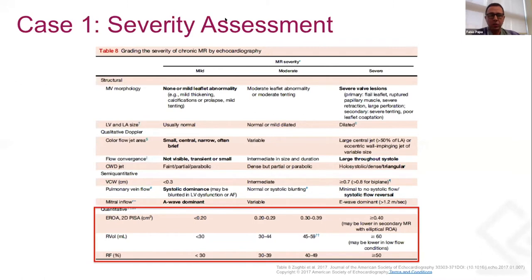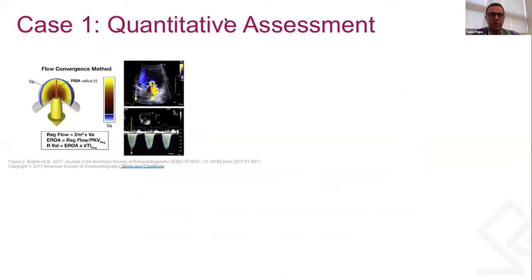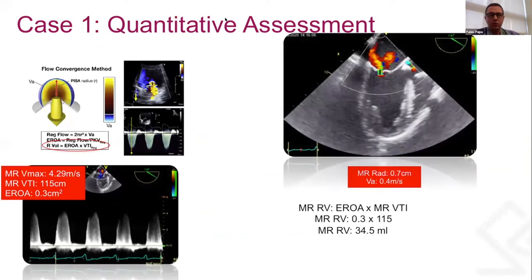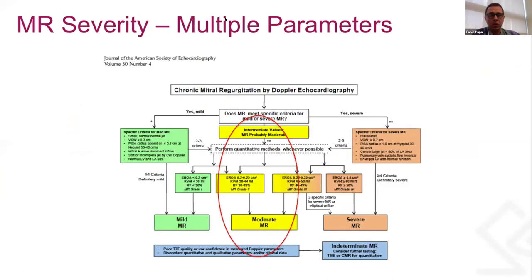Moving to the quantitative approach, we can use the PISA method to measure the EROA, regurgitant volume, and regurgitant fraction to better characterize the severity of mitral regurgitation. For our patient, using the PISA assessment, we measured an EROA of 0.3 cm² and a regurgitant volume of 35 cc's. Using the full integrative approach from the 2017 guidelines, this places the patient in the moderate range of mitral regurgitation, more towards grade 2 than grade 3.